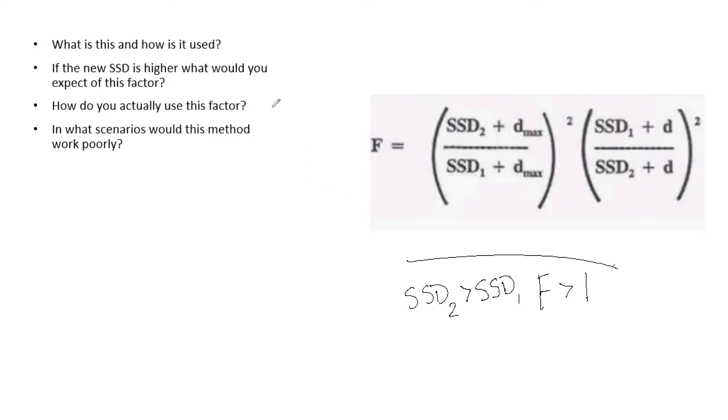So how do you actually use this factor? You have your two different SSDs and your depths and your D maxes. When you plug all those in for your two different treatment regimes, you're going to gain this F factor here. You multiply this F factor to the percent depth dose of your curve, and that is going to give you the percent depth dose at your new curve at your new SSD.